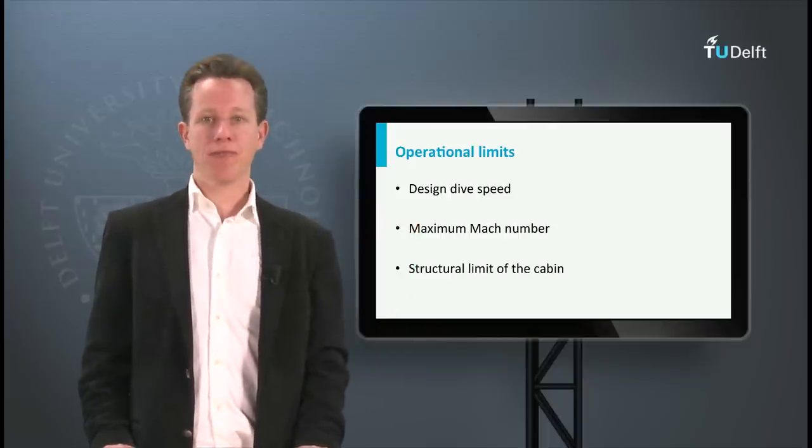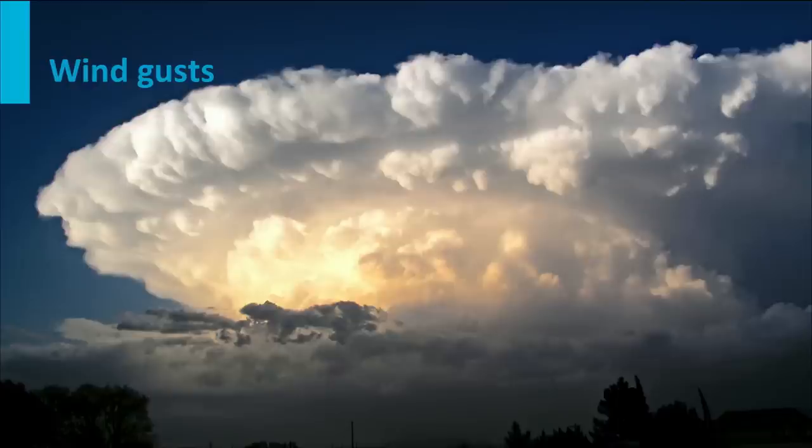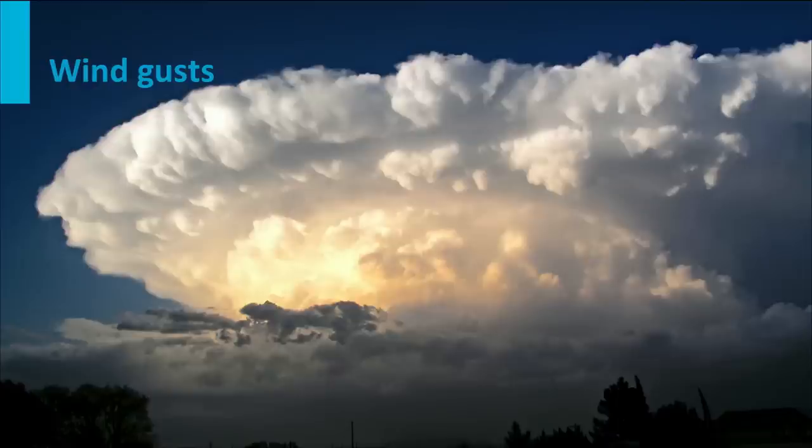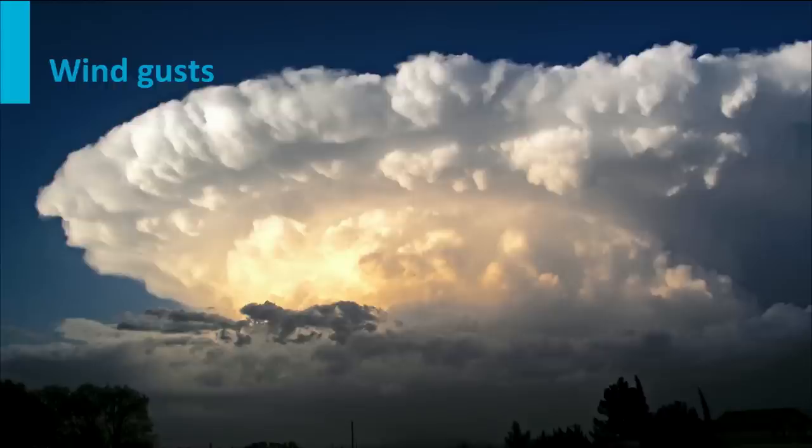During flight, gusts and turbulence can be encountered. Based on statistics of the atmosphere, it was determined by the airworthiness authorities that the structural design of an aircraft must be able to cope with a positive or negative gust of 25 feet per second. If an aircraft suddenly encounters such a gust, then the angle of attack will change immediately.